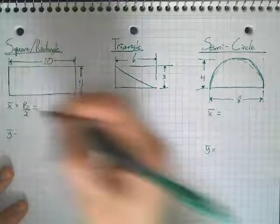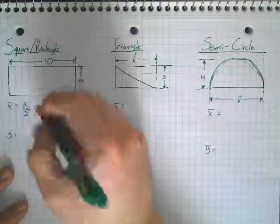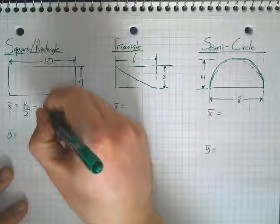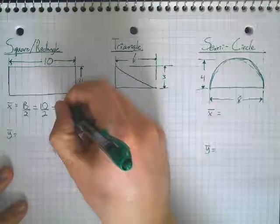So, if we plug in numbers for that, our base is ten. So, ten over two, our x bar is equal to five.